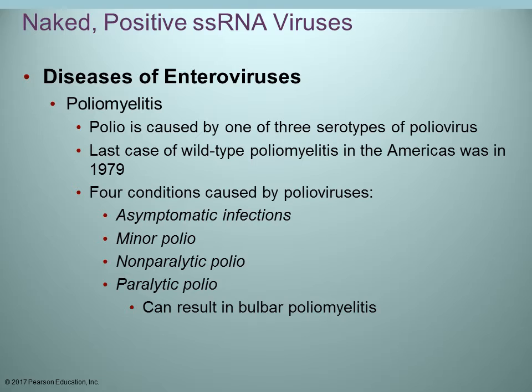Looking first at poliomyelitis, abbreviated as polio. There are three different serotypes of polio that can cause this disease. The number of cases has gone down dramatically since the advent of the vaccine. There were four different types of conditions caused by poliovirus: asymptomatic infections, minor polio, non-paralytic polio, and paralytic polio.